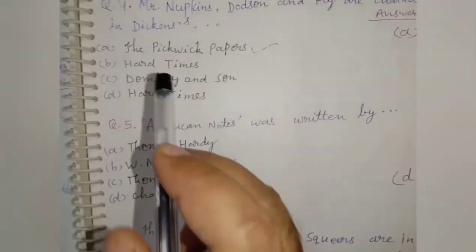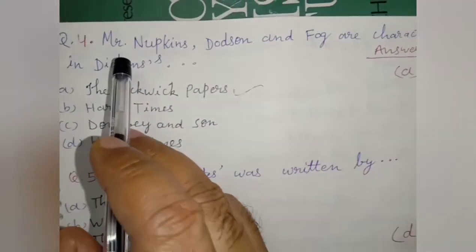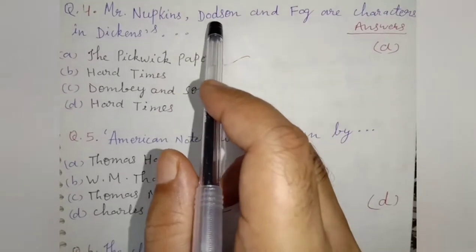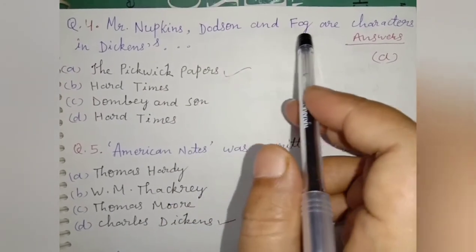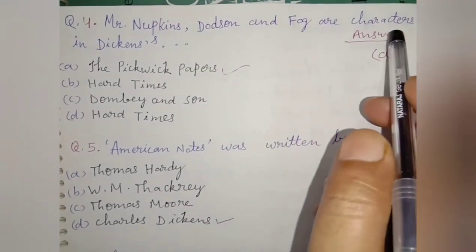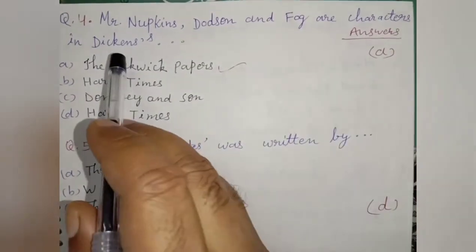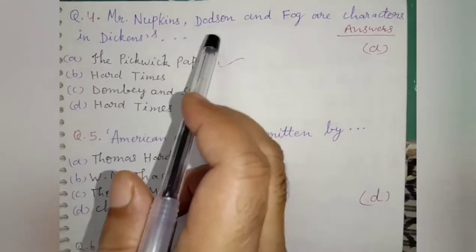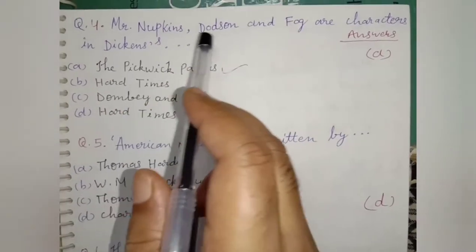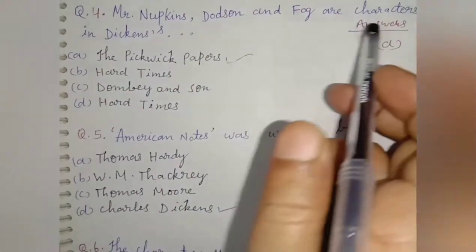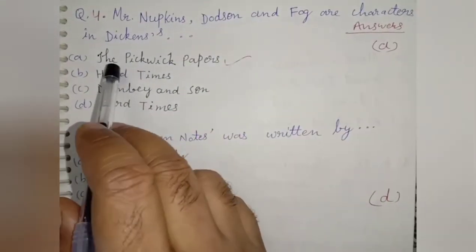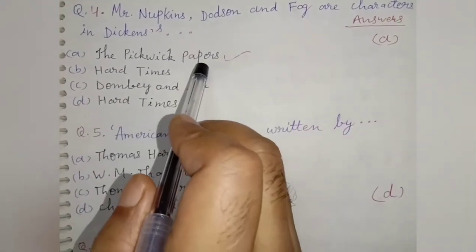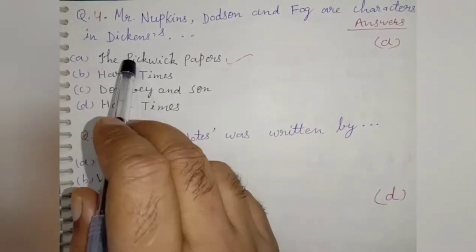Next question: Mr. Pickwick, Dodson, and Fogg are characters in which Dickens novel? The right option is The Pickwick Papers — option A is correct.